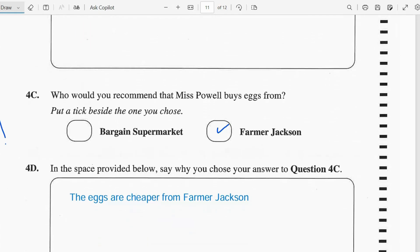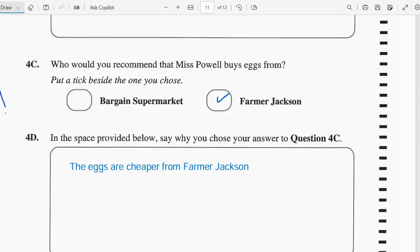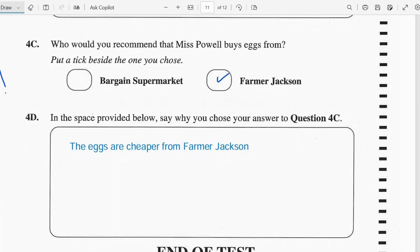So 4C says who would you recommend that Ms. Powell buys eggs from. And this would be Farmer Jackson. And the reason for this is because the eggs are cheaper from Farmer Jackson.